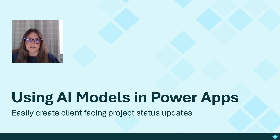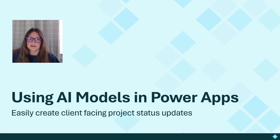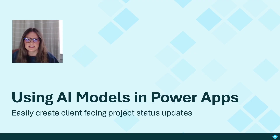Now imagine entering just the key details — project status, next steps, and a deadline — and your AI model does the rest. With AI models and Power Apps, you can generate polished, client-ready updates instantly. Let's dive into how this works.